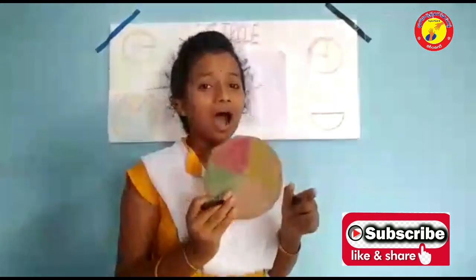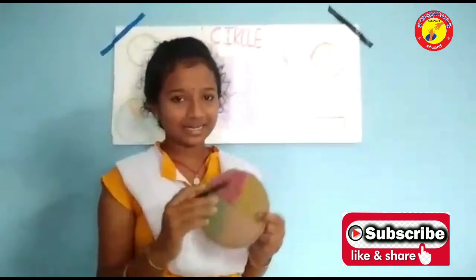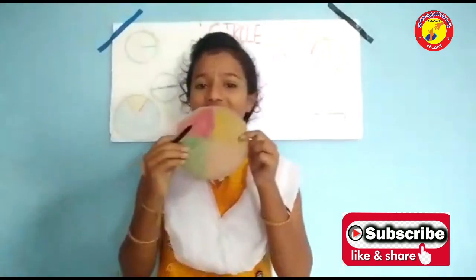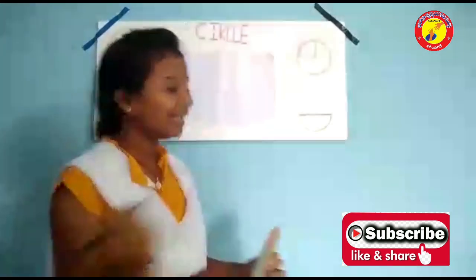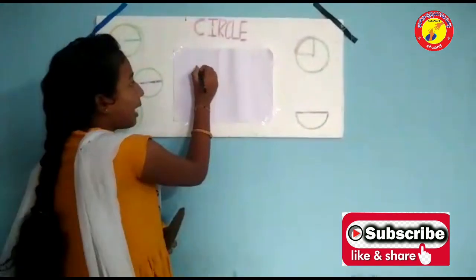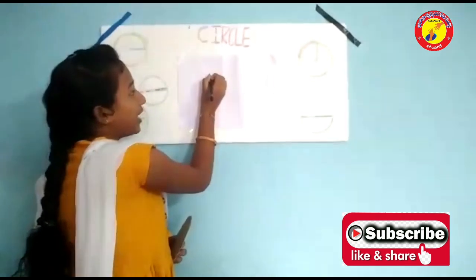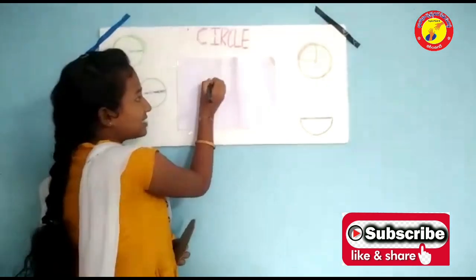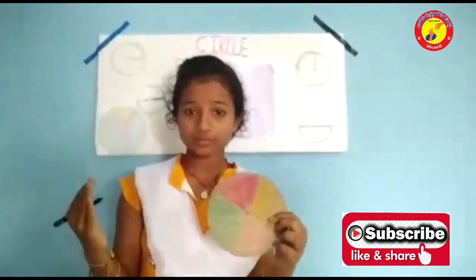A part of a circle is an arc. The total length of a circle is known as the circumference. The circumference of a circle is 2πr or πd, where π is equal to 22/7 or 3.14.